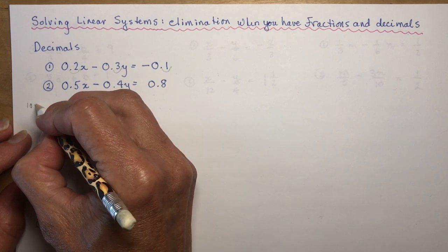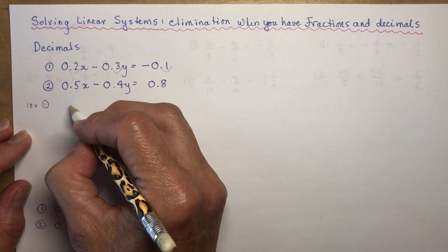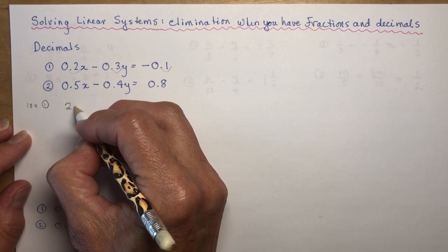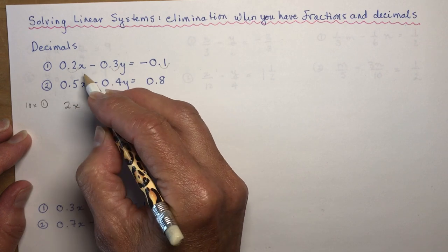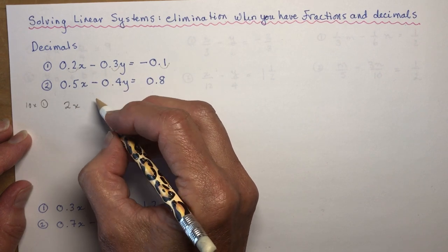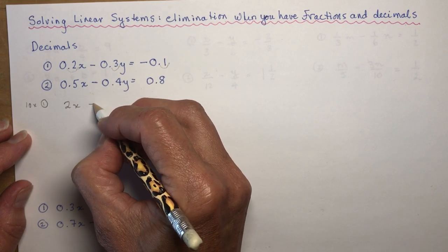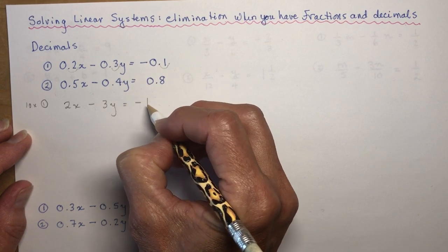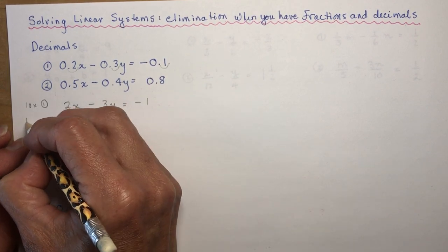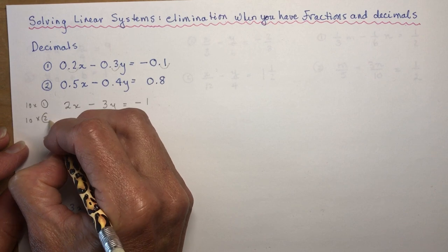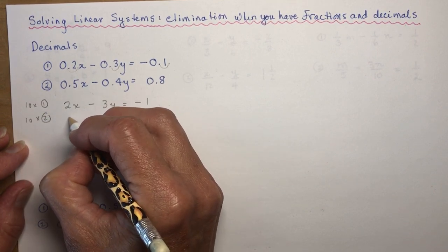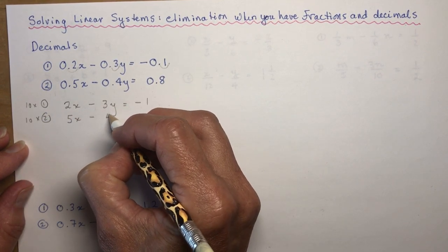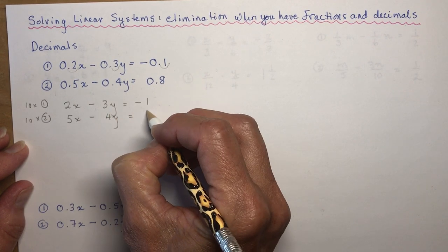So 10 times equation 1 — all you do is move the decimal over — gives me 2x minus 3y equals minus 1. Of course if you had hundredths you'd multiply by 100. Equation 2 multiplied by 10 gives me 5x minus 4y equals 8.